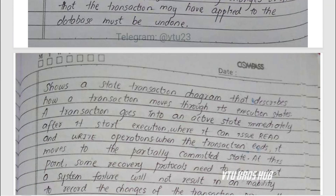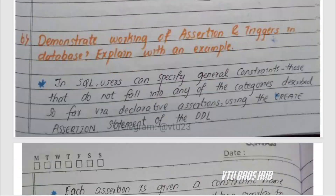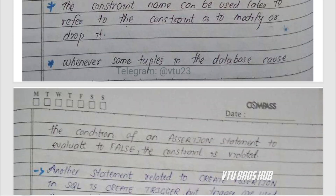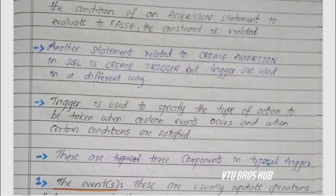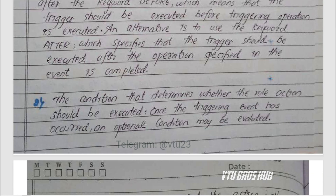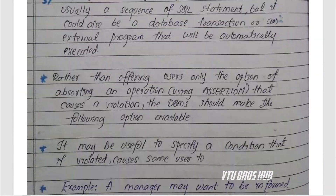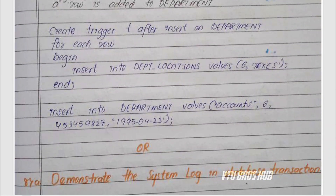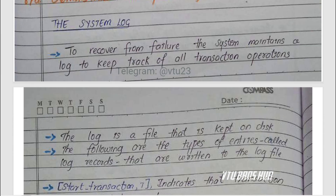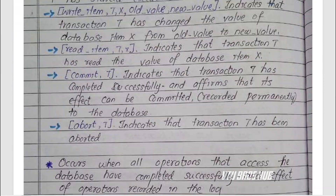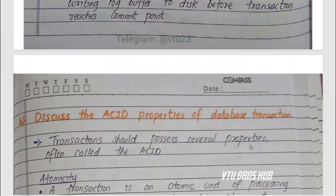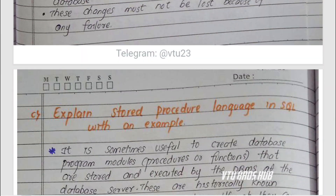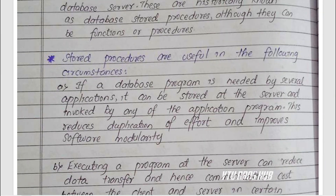Module 5: concurrency control and NoSQL. This is a theory-heavy module. Cover two-phase locking, timestamps, and validation methods. Then shift to NoSQL — know the basics of MongoDB, document and key-value stores, and the CAP theorem.